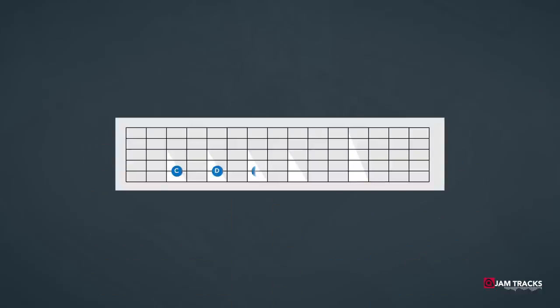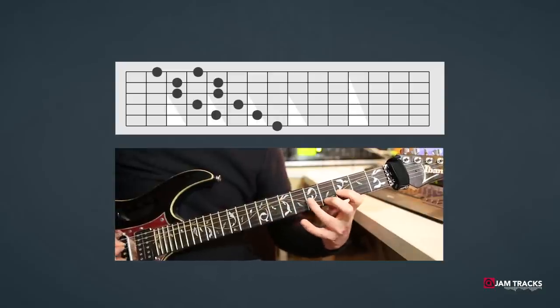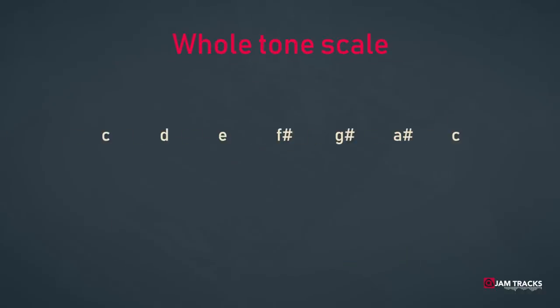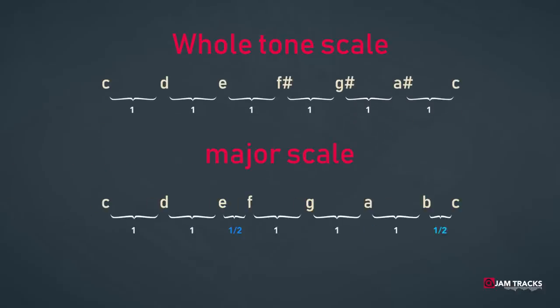If we play a scale where the distances between the notes are all the same, we'll end up with a strange and boring scale called the whole tone scale. It's boring because there is absolutely no sense of homecoming — all the notes have the same weight and there's no tonal center. That's because there are no half-step intervals in this scale, which we do see in the major and minor scale. Those half-steps attract each other more than notes with whole-step intervals, and we experience them as nice.